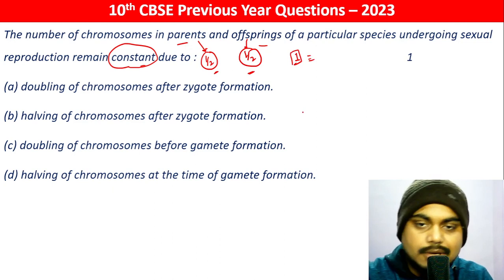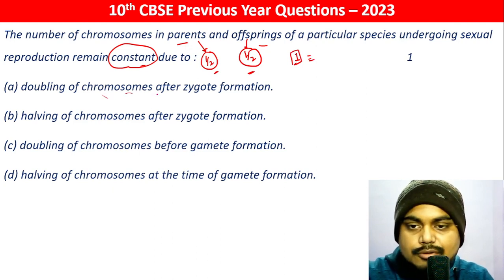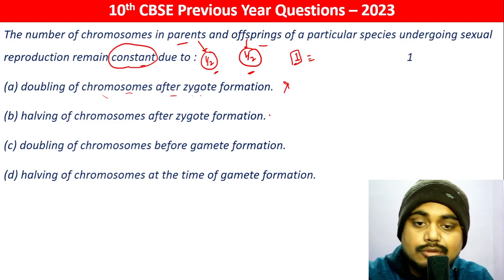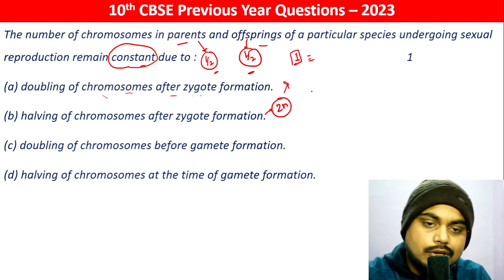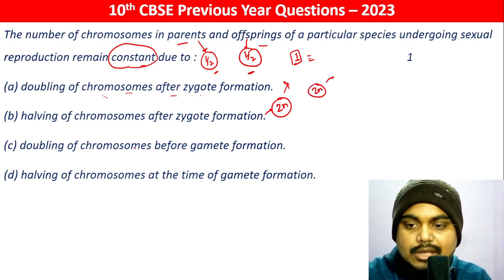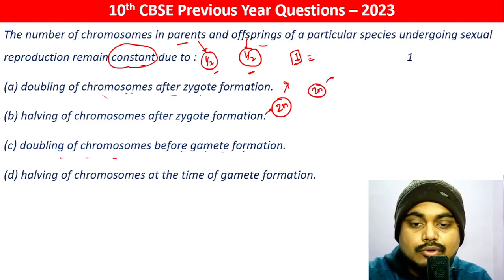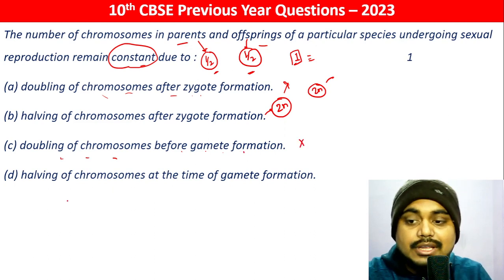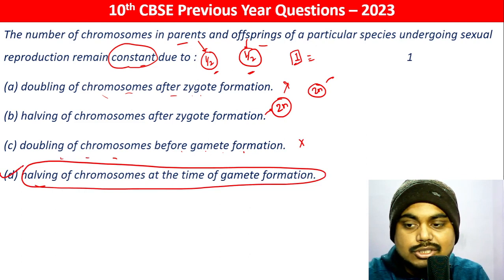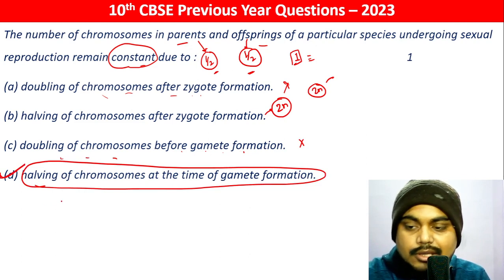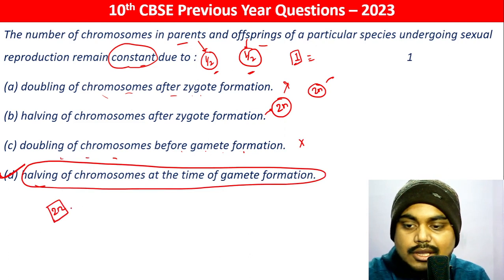So doubling of chromosomes after — no, that's not it. Halving of chromosomes after zygote formation — no, because zygote is 2n and the body is also 2n only. Doubling of chromosomes before gamete formation — no. Halving of chromosomes at the time of gamete formation — yes, this is true.